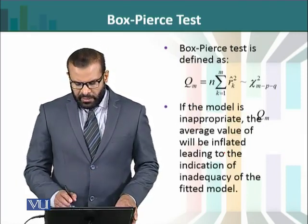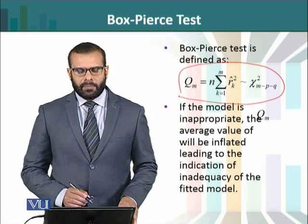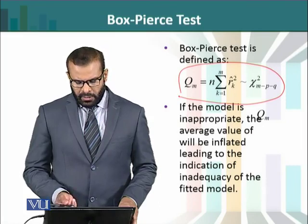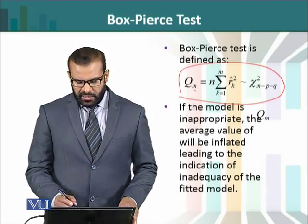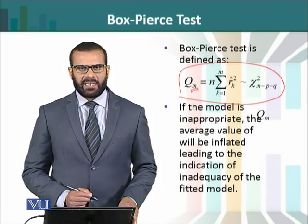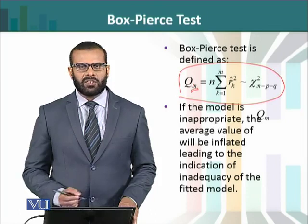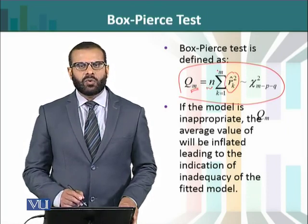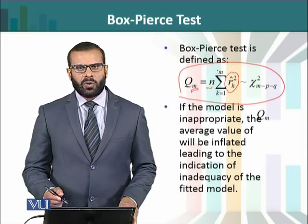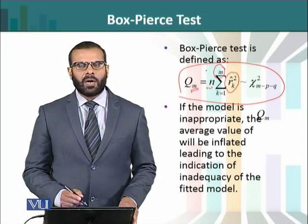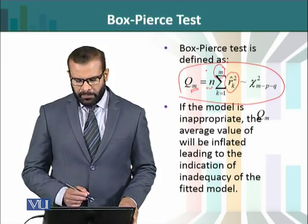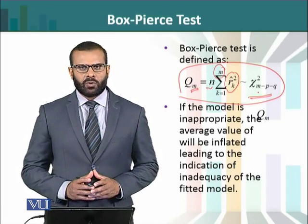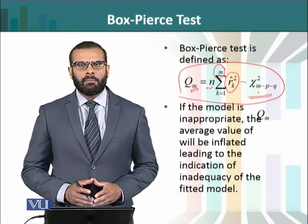Box-Pierce test کا فارمولہ کچھ اس طرح سے ہے: Qm is equal to n times the sum of squared residual autocorrelations۔ Qm ہم ایک statistic کے طور پر use کر رہے ہیں جس کو Box-Pierce test کے طور پر denote کریں گے۔ اس کا subscript m وہ number of lags ہیں جو ہم نے select کیے ہیں — جہاں تک ہم residuals کی autocorrelation کو test کرنا چاہ رہے ہیں۔ n is the sample size، اور r̂k is the residual autocorrelation — ان residual autocorrelations کو square کر کے sum کیا جاتا ہے up to m۔